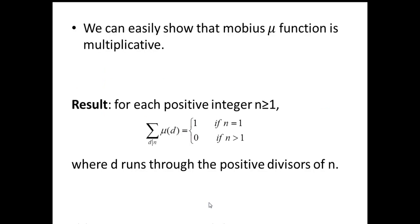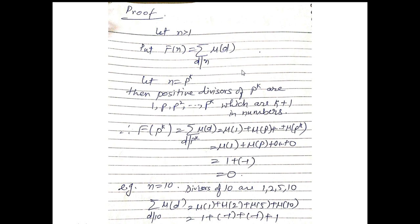We can easily show that the Möbius mu function is a multiplicative function. Now let us see this result: for each positive integer n ≥ 1, define F(n) = Σ μ(d) where d runs through the positive divisors of n. This sum equals 1 if n = 1 and 0 when n > 1. To prove this, take n > 1 and let n = p^k.